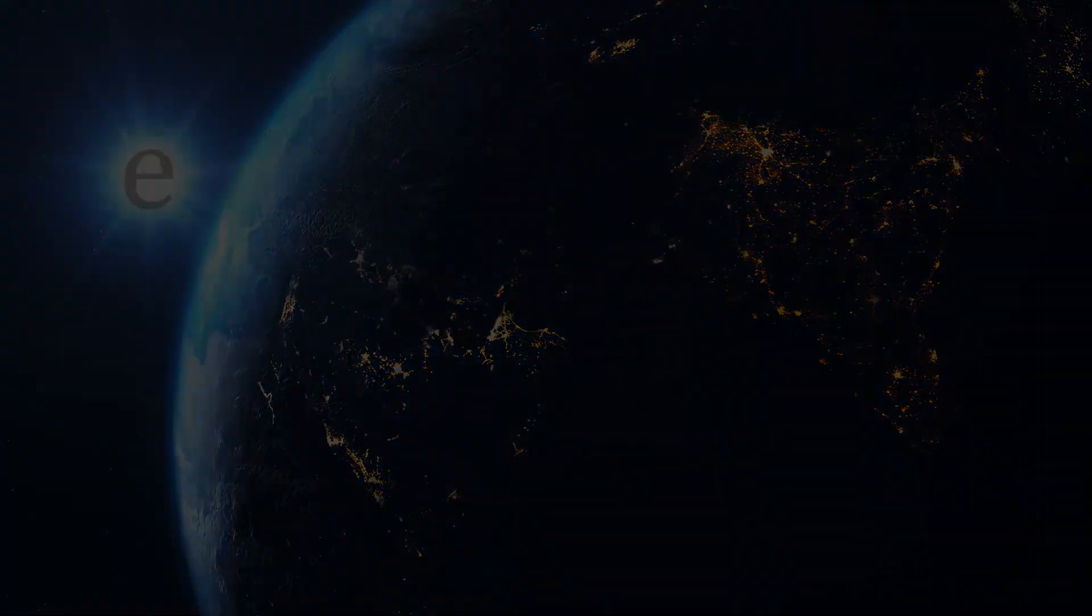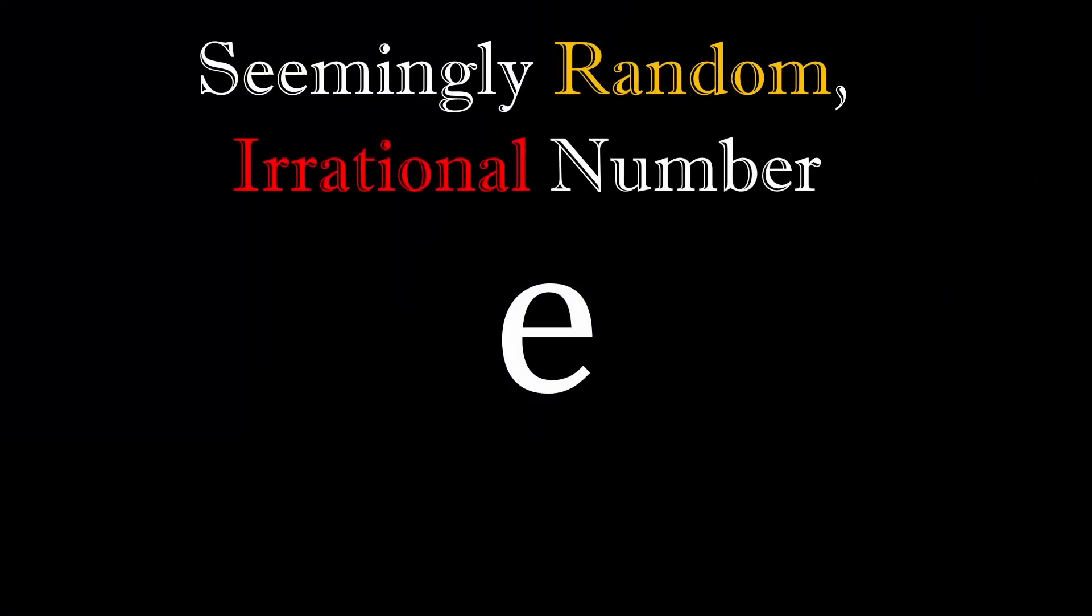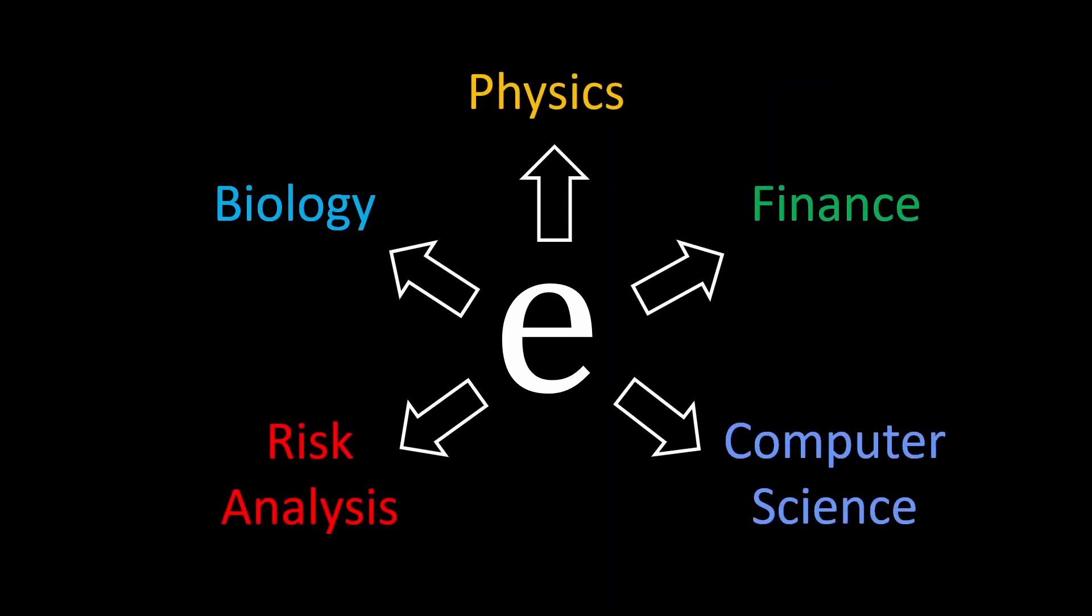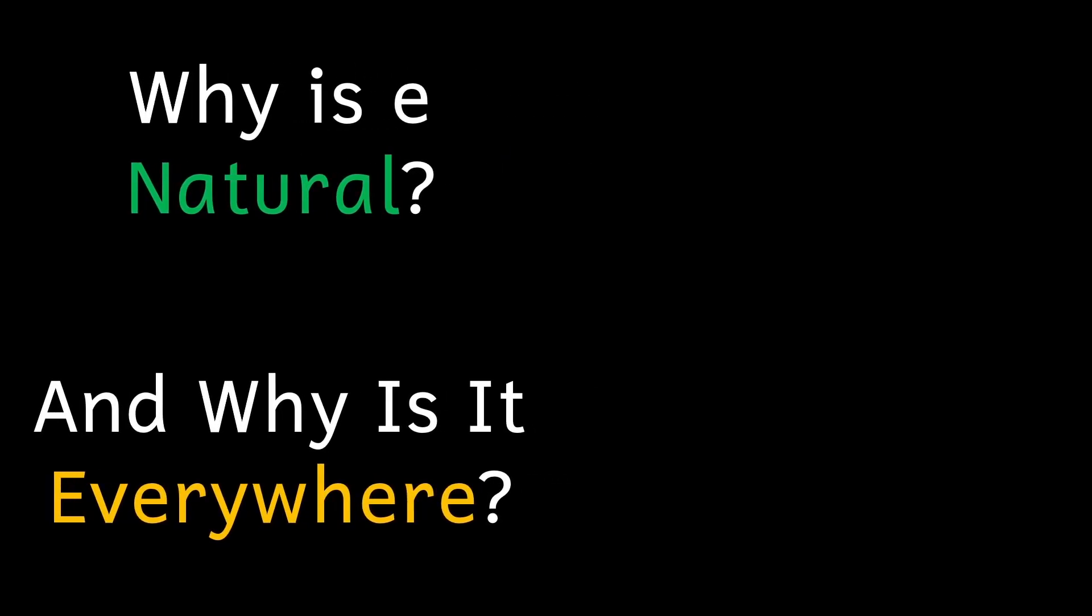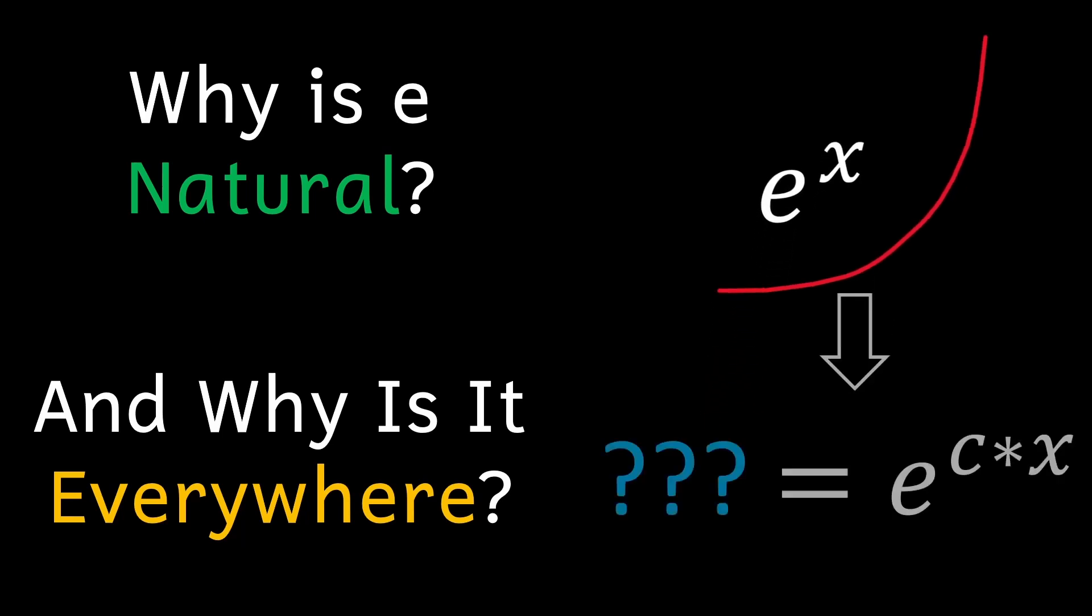But that begs another question. Why does this seemingly random, irrational number show up in so many unconnected places? By the end of this video, I'm going to answer both those questions and hopefully change your understanding of exponential growth from just another function you learn in school to something that truly shows why e is natural and why it shows up everywhere.